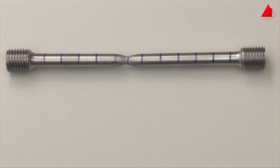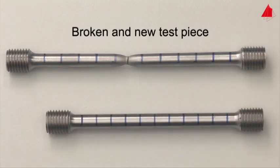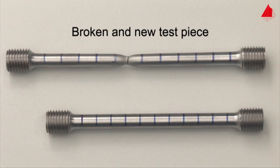With the help of the distance marks, the percentage elongation after fracture can be determined. This is the permanent strain after fracture and amounts to about 30 percent in this example. Please note that the percentage elongation after fracture depends on the length to diameter ratio.